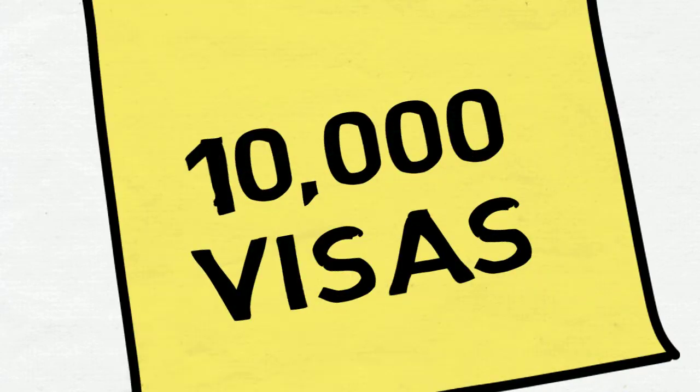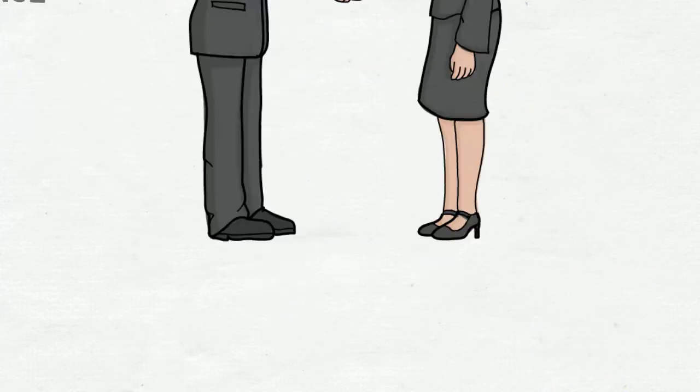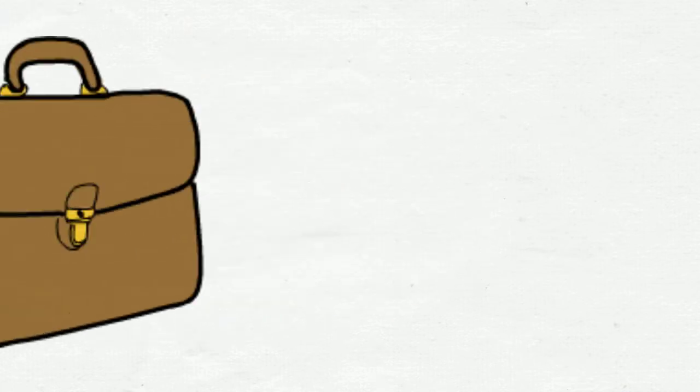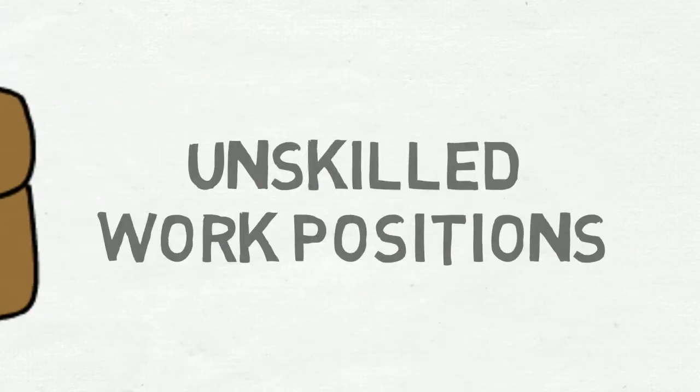It's called the employment-based preference, EB3, Other. The U.S. government allocates 10,000 visas each year for employment-based sponsorship through EB3 for employers that have proven labor shortages in unskilled work positions.